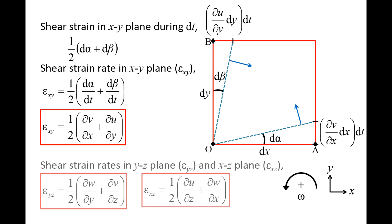The shear strain rate in the yz plane, labeled epsilon yz, is equal to one-half times the quantity partial w partial y plus partial v partial z. The shear strain rate in the xz plane, labeled epsilon xz, is equal to one-half times the quantity partial u partial z plus partial w partial x.